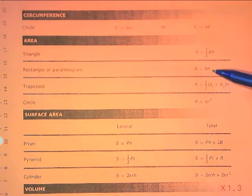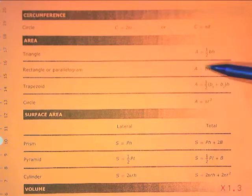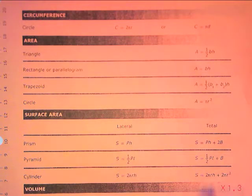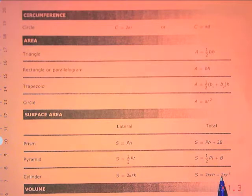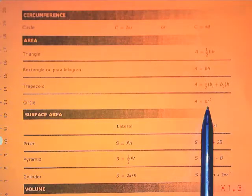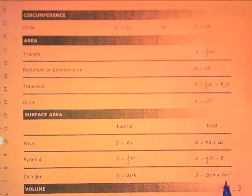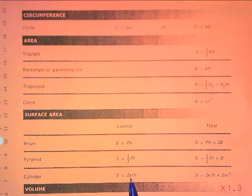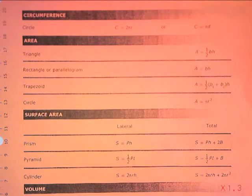For the cylinder, the difference between the two formulas is this 2πr², and we know πr² is the area of a circle. A cylinder has two circles, and the lateral surface area goes around the side of your two circular bases.